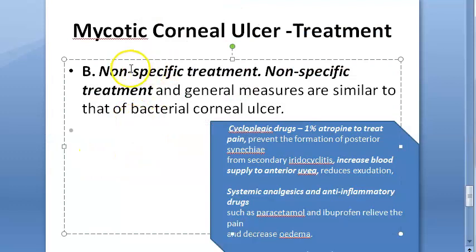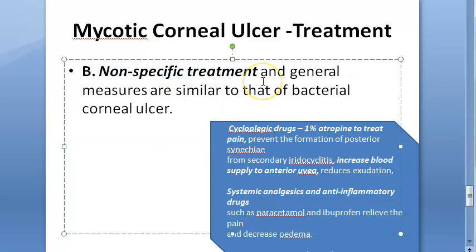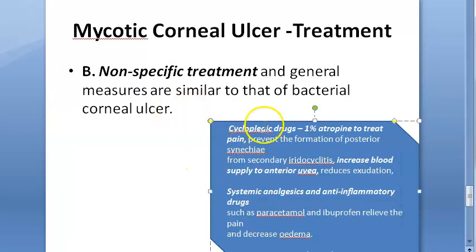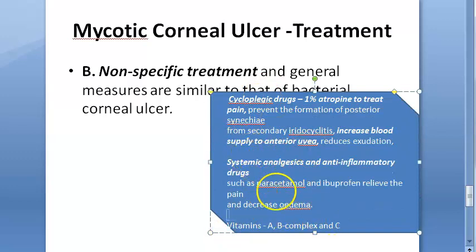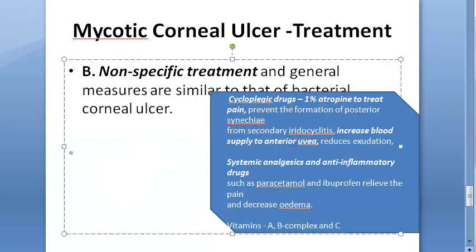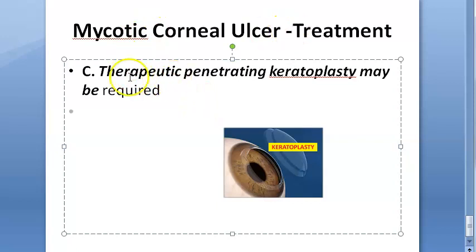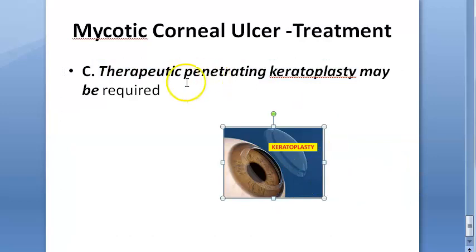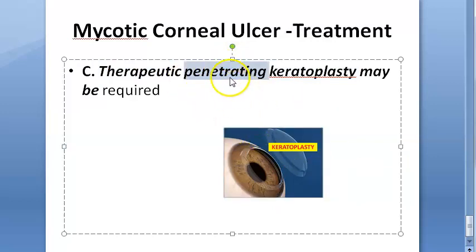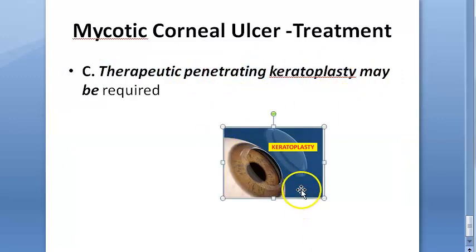Non-specific treatment includes general measures similar to other corneal ulcers: cycloplegic drugs like atropine for relieving pain, paracetamol, and vitamins A, B, and C. If needed, a full-thickness corneal transplant — penetrating keratoplasty — may be required. Therapeutic keratoplasty is indicated when there is perforation or impending perforation.